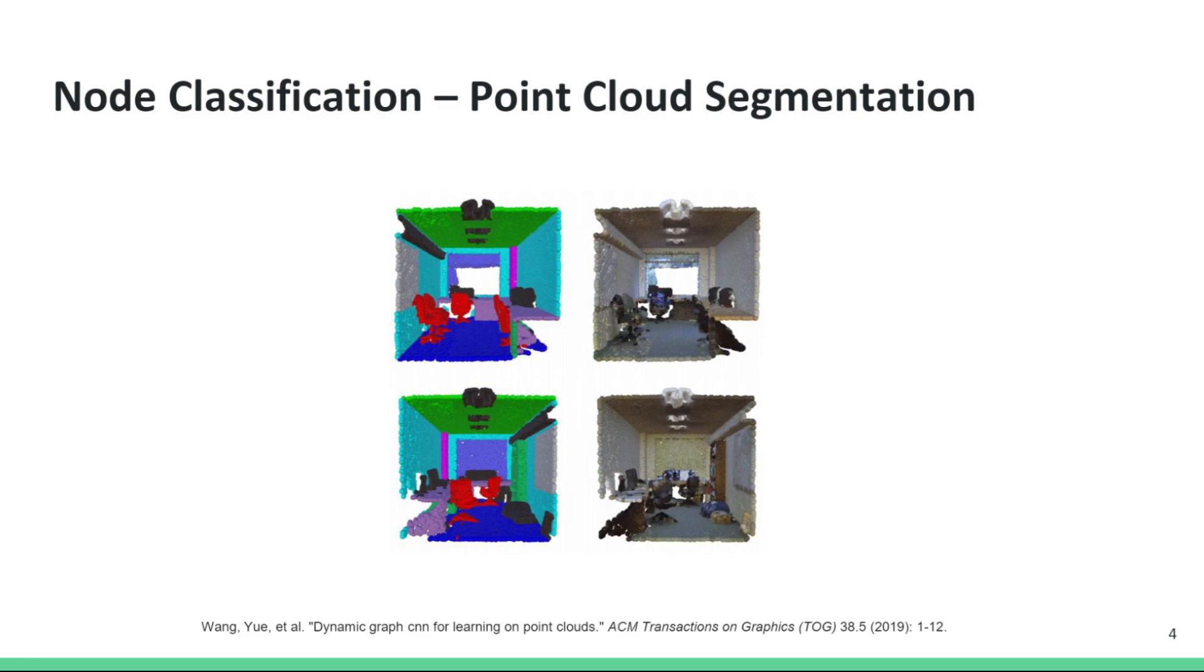One example of node classification is point cloud segmentation. A point cloud is a collection of points with some coordinates that are obtained, for example, by a laser scanner. These points can be used to construct a graph by creating edges between nearby points. The example shown here is of semantic point cloud segmentation, where the points are classified according to objects they belong to. We can see here that points belonging to the chairs and the walls are labeled differently.